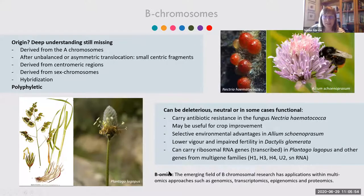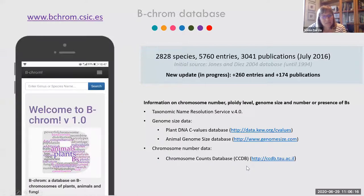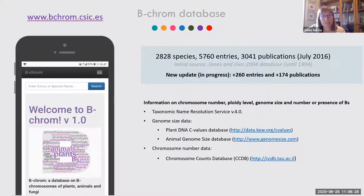Ribosomal RNA genes have been found in certain populations of Plantago lagopus, and other genes from multi-gene families have been found in B chromosomes, so they are not always non-coding. There is also an emerging field called bOmics related to the applications that B chromosomes can have in plants. Because we were interested in B chromosomes, we organized the information about B chromosomes in plants, animals, and fungi in the bChrome database.